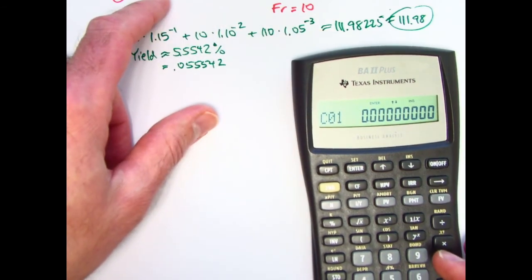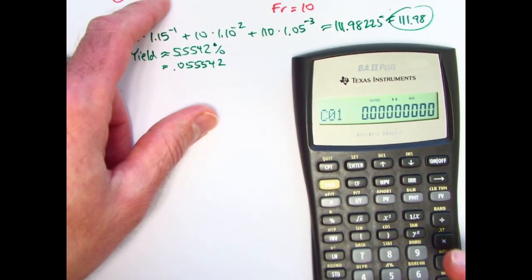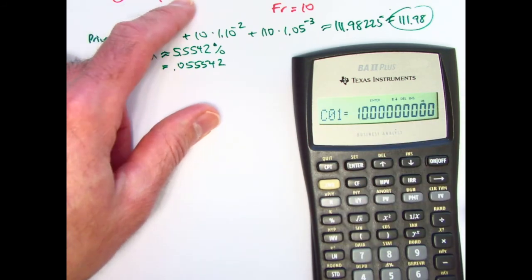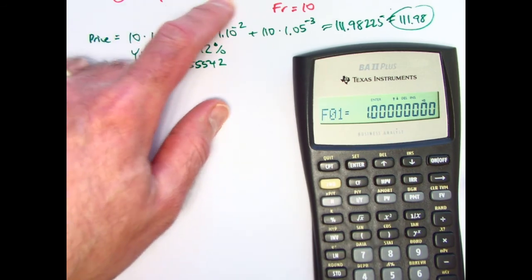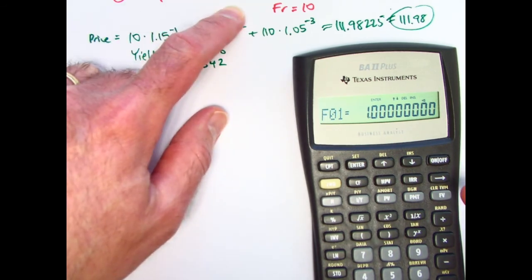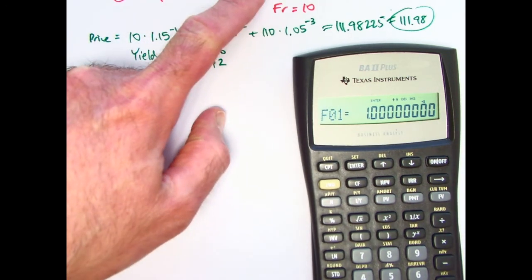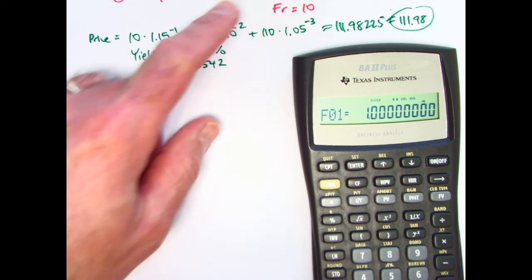C01, I can take to be the 10. Enter that. Now, I've got to be a little careful here. You might say, okay, the frequency of the payments of 10 is 3. However, then if you put into C02, if you put the 100, it's going to assume, the calculator is going to assume that that 100 is at a time 4. So actually, if I want to use the frequency for the 10, I want to just do a 2.